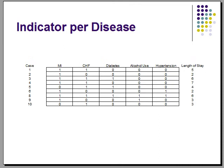Here, I took the data and indicated whether or not each patient had a certain disease. As mentioned on the last slide, case number one presented with MI and CHF. Therefore, I entered a one in the MI and CHF columns in the case number one row. I entered zeros under diabetes, alcohol use, and hypertension for case one to indicate that that patient did not present with those diseases or conditions. On the right, you will see the length of stay for each patient.